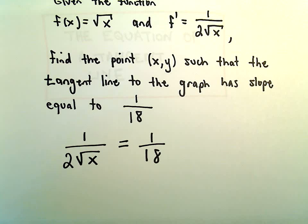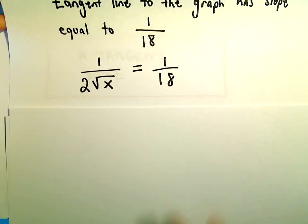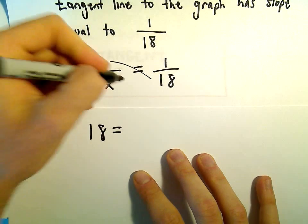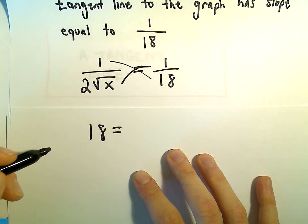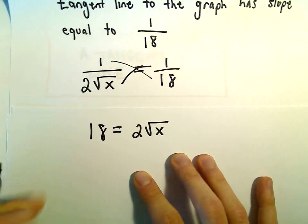To solve this equation, this is one that's not too bad. Typically, any time I have a fraction on both sides, I just cross multiply. So we can do 1 times 18, that'll give us 18. And then 1 times 2 square root of x, that'll give us 2 square root of x.